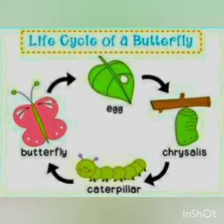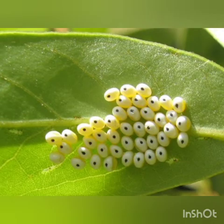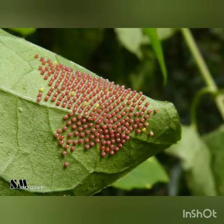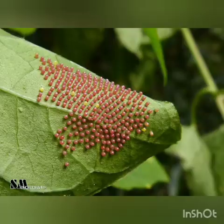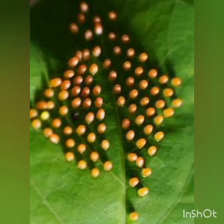The first stage is egg. A butterfly starts life with an egg. This egg lasts for three to seven days. These eggs are usually laid on a plant by the female adult butterfly. They are usually found in spring, summer, or fall season. The female lays a lot of eggs at once so that at least some of them will survive. Usually they are small, round, and oval in shape.